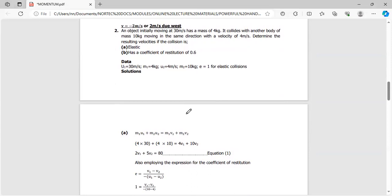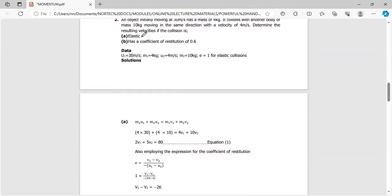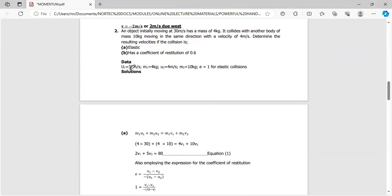The second one is about a body moving at 30 m/s with mass 4 kg, colliding with another body of mass 10 kg moving in the same direction at 4 m/s. We need to find the resulting velocities assuming it's elastic, where E equals 1. U1 is 30 m/s, M1 is 4 kg, U2 is 4 m/s. They're moving in the same direction, so both are positive. M2 is 10 kg, and E is 1.